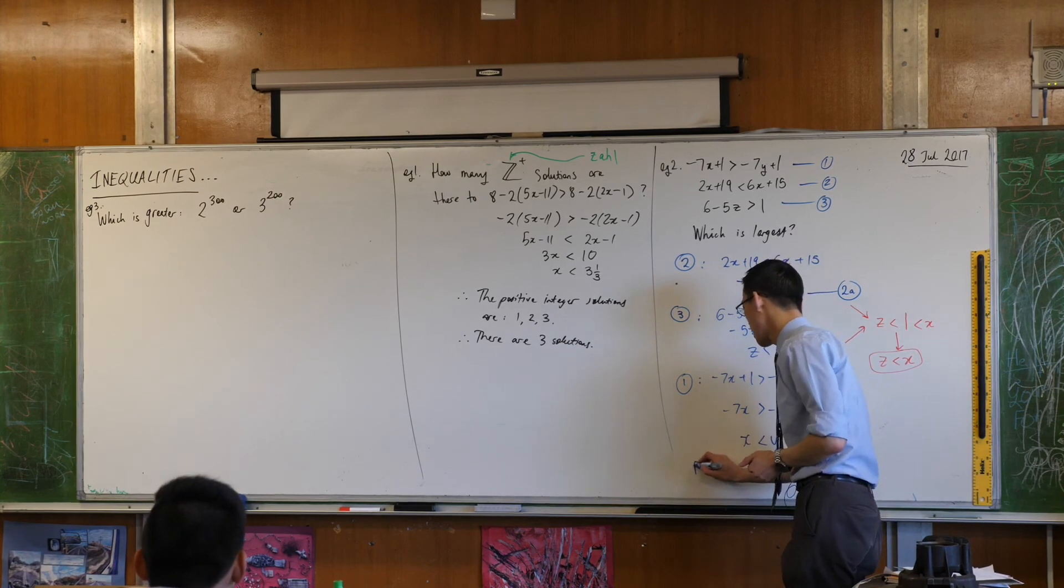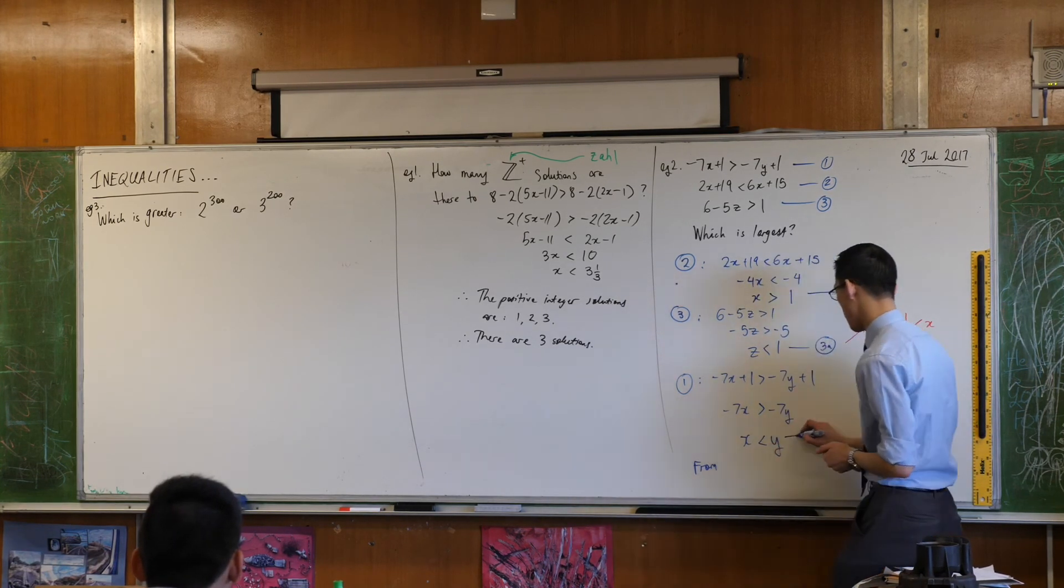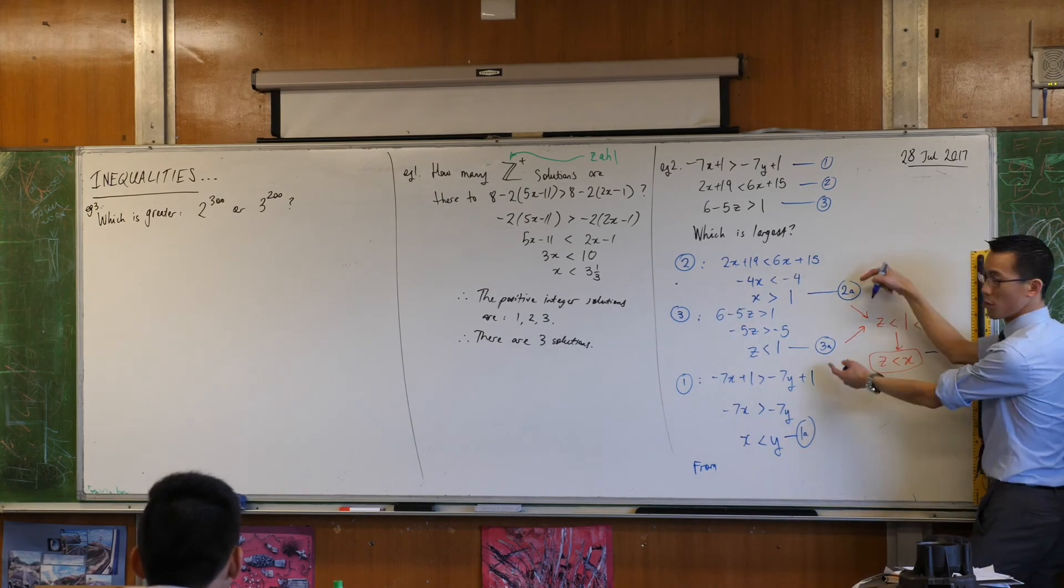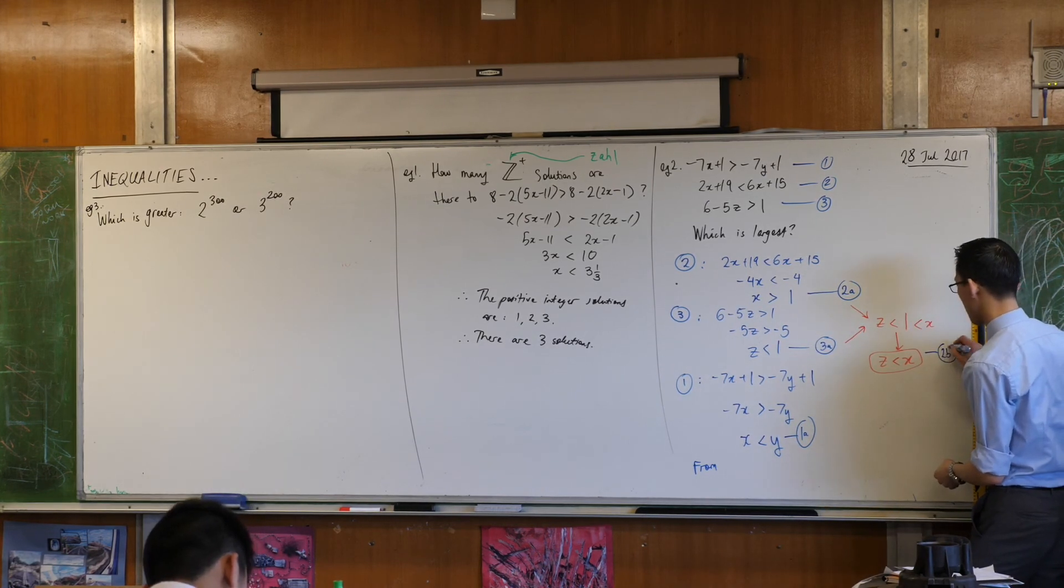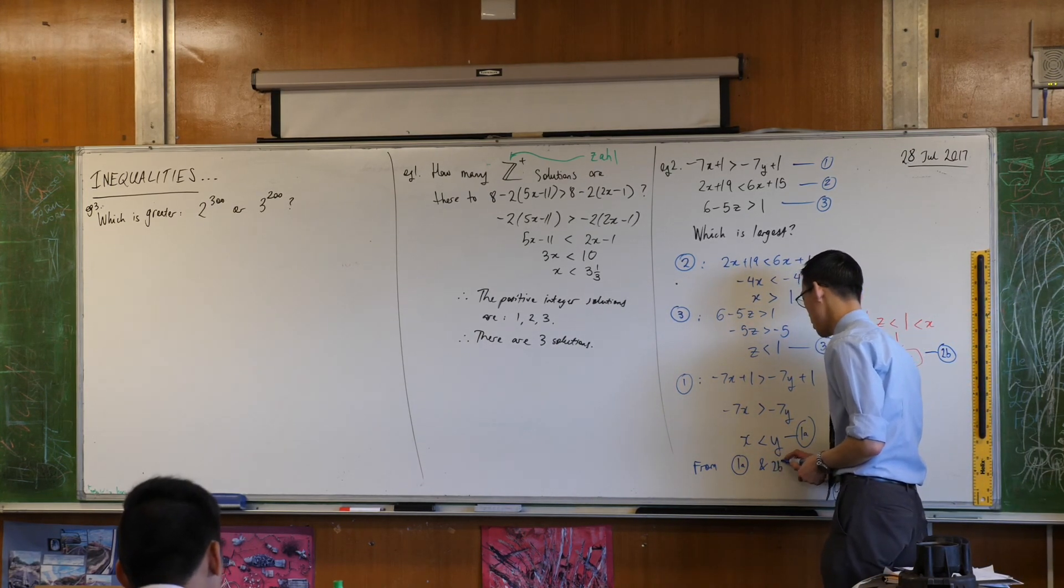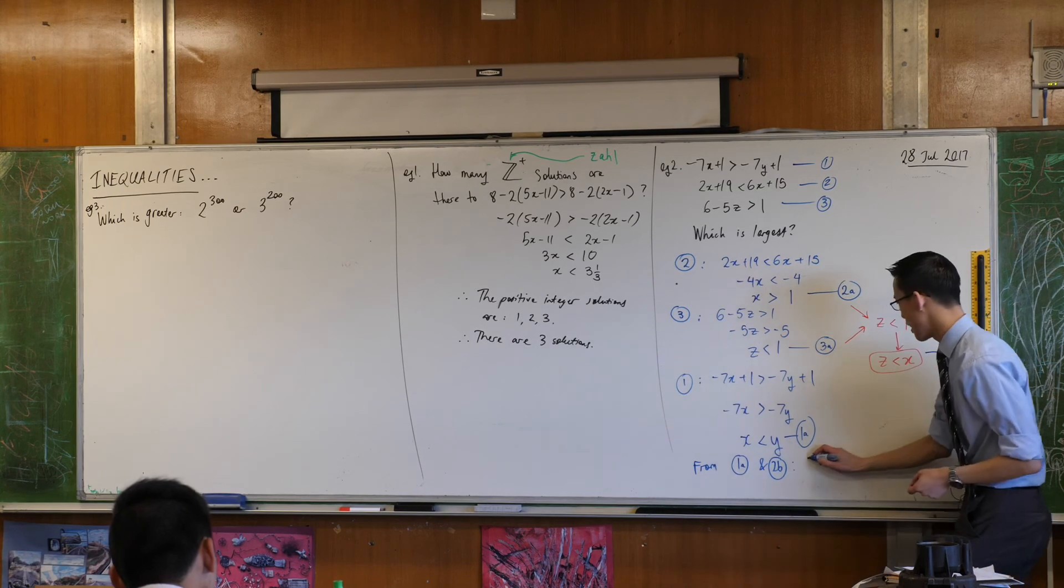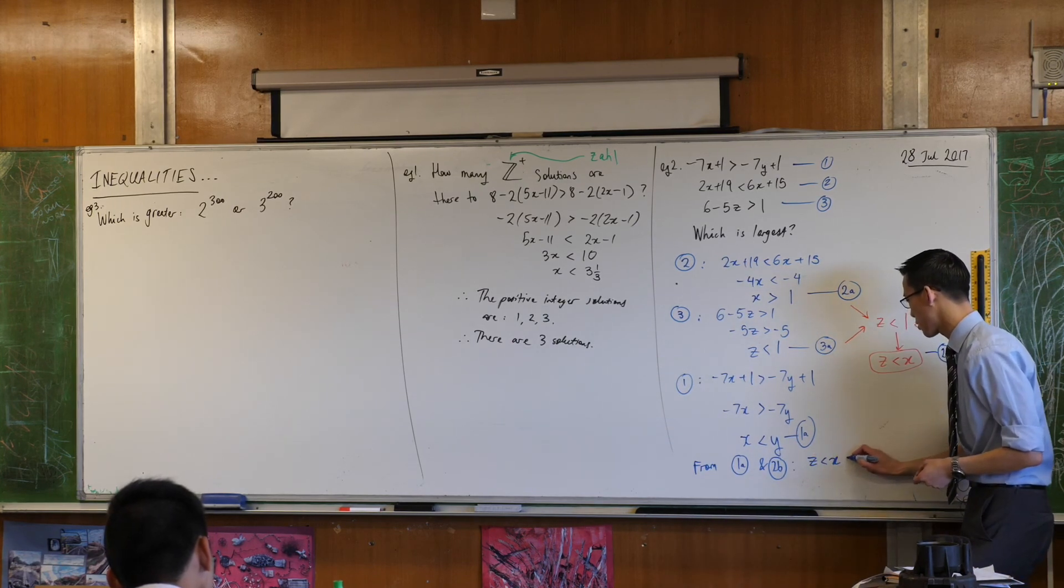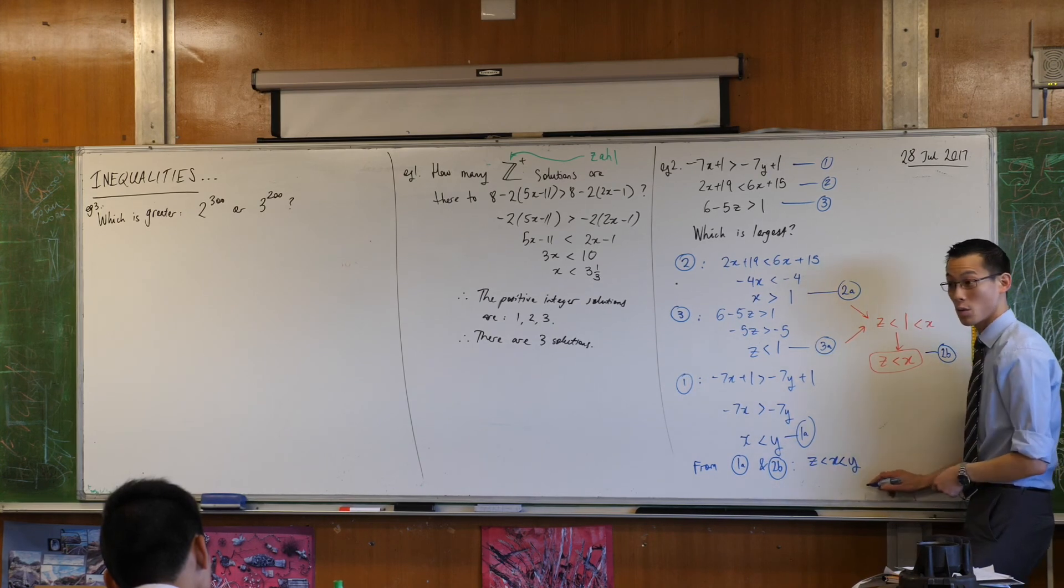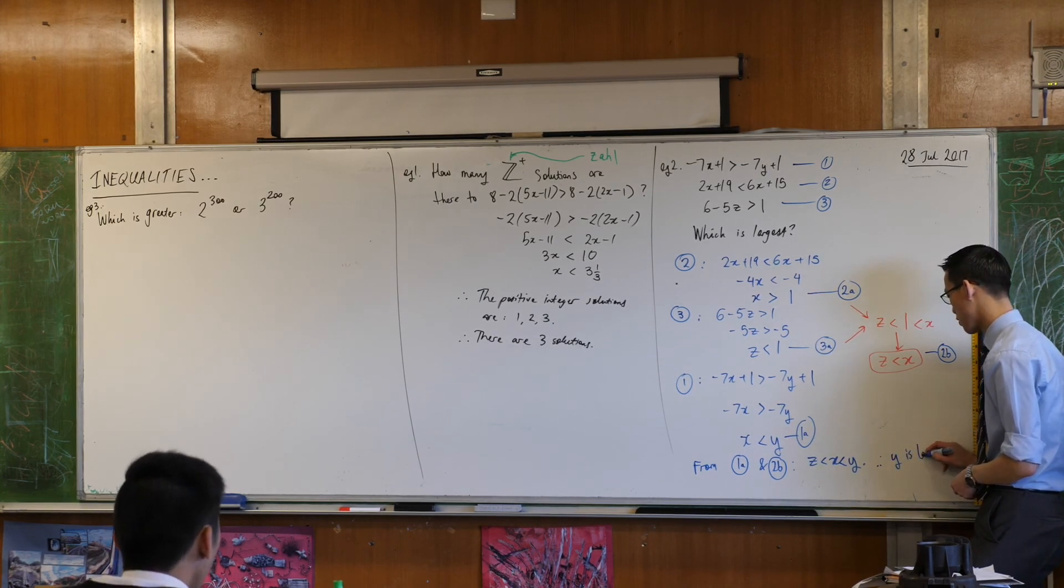So therefore I can say from, let's name this 1a. This is a bit tricky because it comes from different spots. I guess I'll call it 2b. From 1a and 2b I can say z is less than x - I could say that there's a 1 in there but I don't need to - it's less than y. Therefore y is largest.